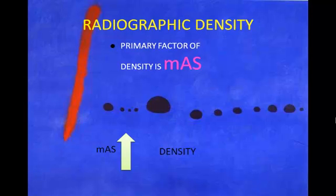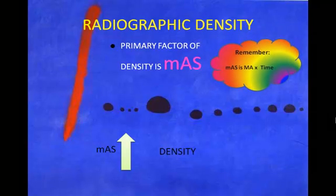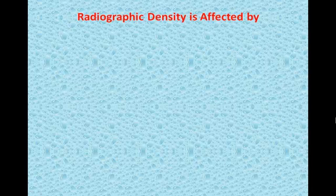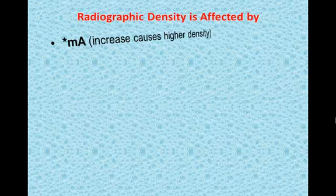It is mathematically very easy to figure out how to make changes to density when utilizing mAs. Some of the other parameters may affect density; however, they are a lot harder to utilize. Many factors can affect density — mA will definitely increase density and it's directly proportional, and time certainly will also increase density.